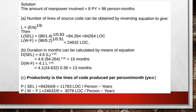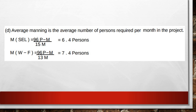The last question is average manning — the average number of persons required per month. Manning = effort ÷ duration. For SEL: 96 ÷ 15 = 6.4 persons required per month. For Watson-Felix: 96 ÷ 13 ≈ 7.4 persons required per month, since the duration is 13 months.